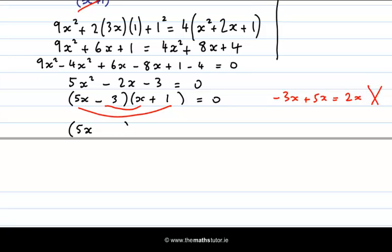So we get 5x and x. This time I'll try plus 3 and minus 1 and I will test it. Inside gives me 3x. Outside gives me minus 5x. And when I add those together I get minus 2x, which is correct. So these are my factors.